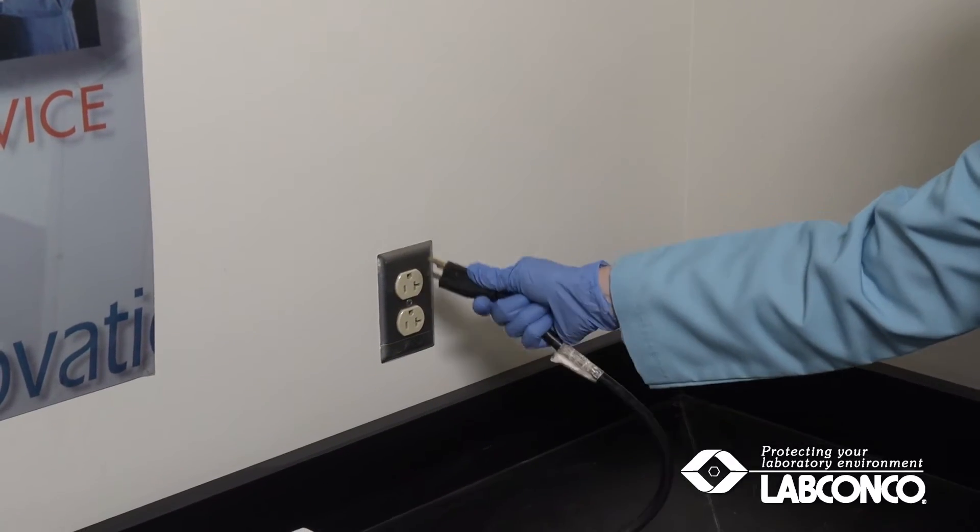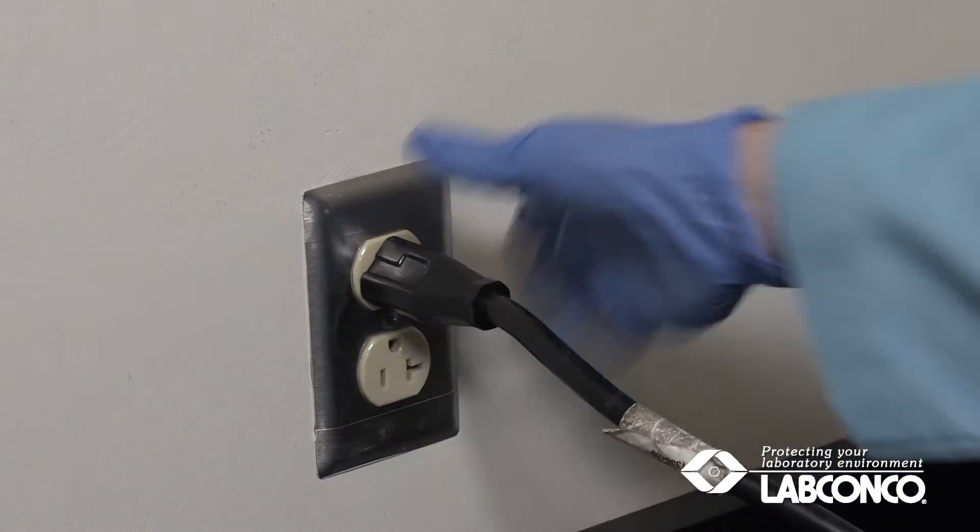Now plug the power cord into the wall receptacle and your RapidVap is ready to use.